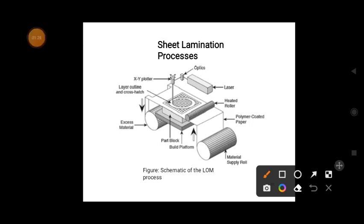Next, we will see the schematic diagram for the sheet lamination process. In this process, there is a material supply roll where layer-by-layer formation is done with the help of a continuous supply of material. From the build platform, this is the part block, and the excess material is again collected in roller form. This component is the XY plotter.